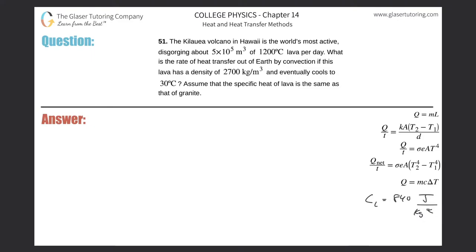Number 51: The Kilauea volcano in Hawaii is the world's most active, disgorging about 5×10⁵ cubic meters of 1200°C lava per day.